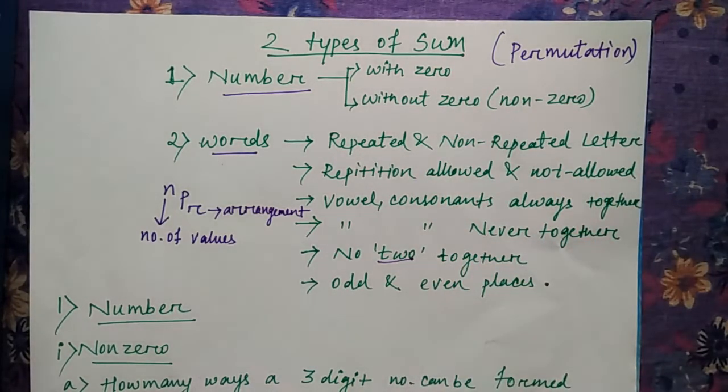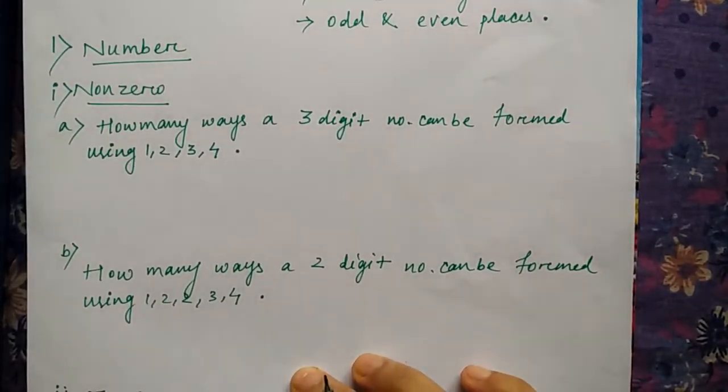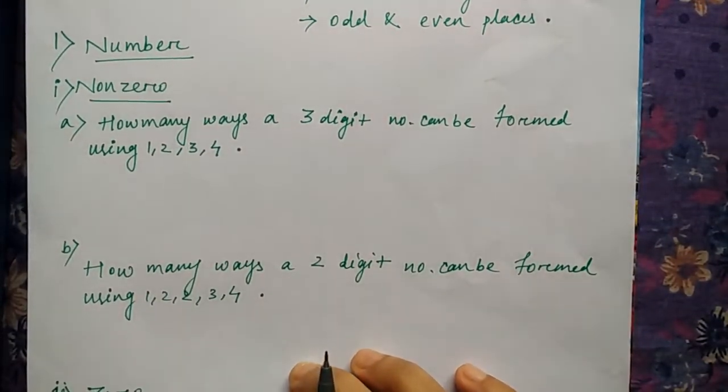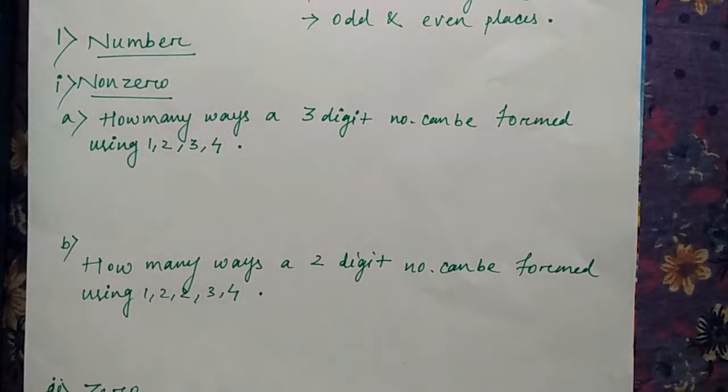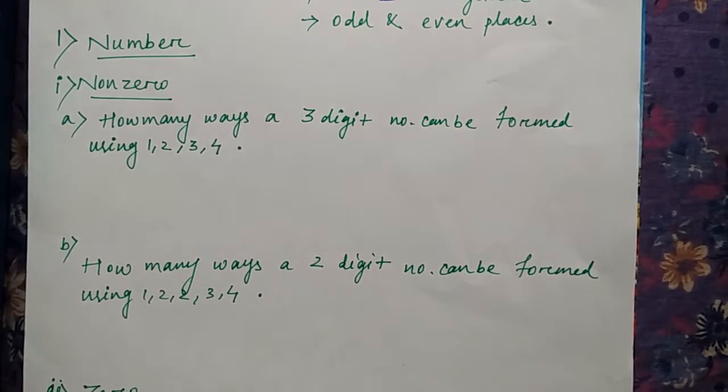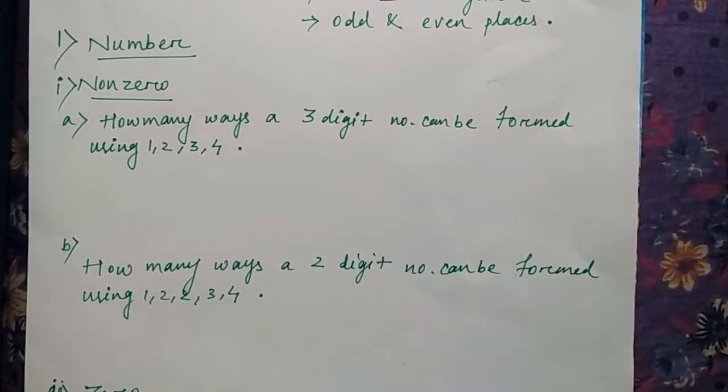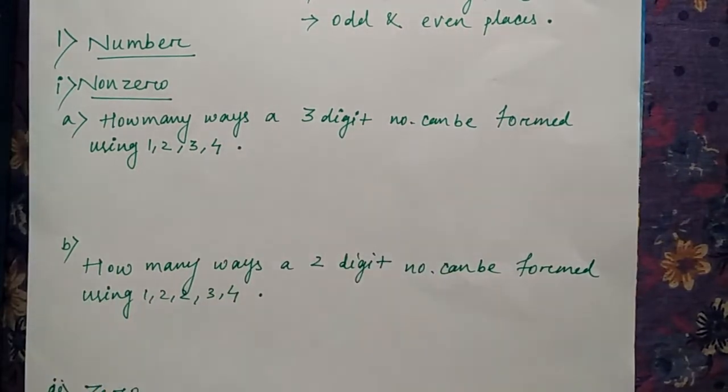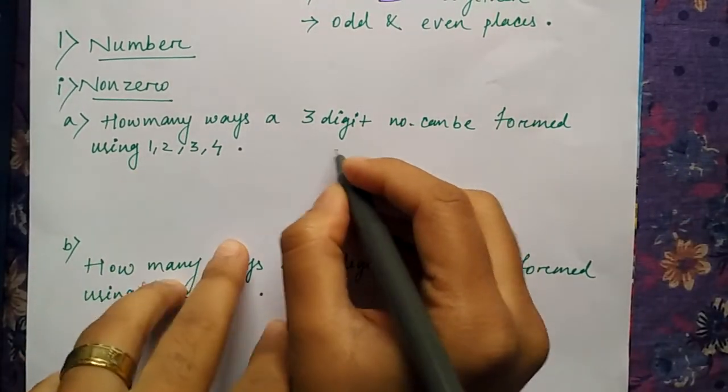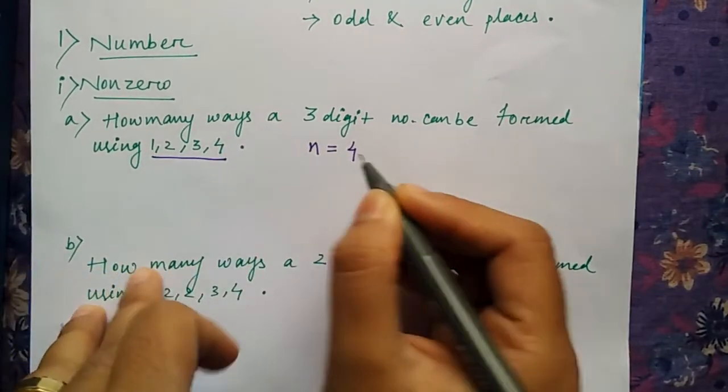First we'll start with number. The first type is non-zero. It is asked, how many ways can a three-digit number be formed using 1, 2, 3, 4? So how many objects or numbers are given here? N is 4, because 1, 2, 3, 4—you can see here.